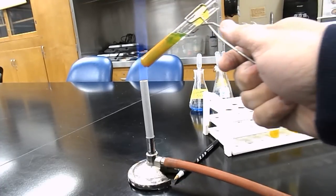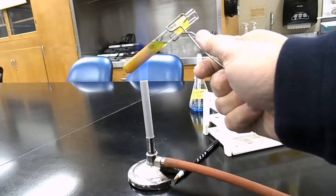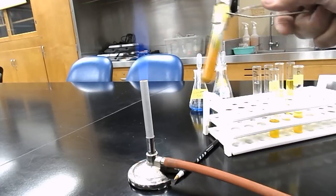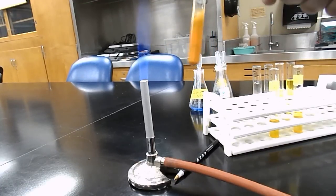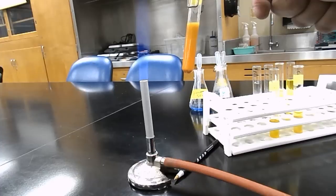What you should get is a color change to orange rust with the presence of a precipitate, as noted by the solution going from clear to cloudy.